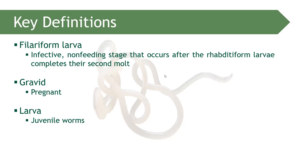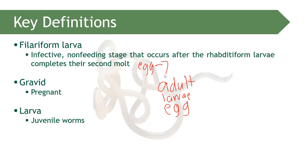Decorticated eggs lack the outer mammillated or albuminous coating. Embryonated egg means the fertilized egg after fertilization. Filariform larvae are the infective stage — the non-feeding stage that occurs after the rhabditiform larvae complete their second molt. The three morphological forms are: egg, larvae, and adult. The egg will mature into larvae, which will then mature into adult. The size, structure, appearance, and characteristics of the egg vary among different helminths — the egg of Enterobius differs from Ascaris, and Trichuris differs from Capillaria.